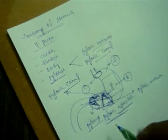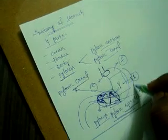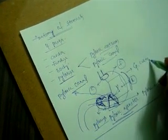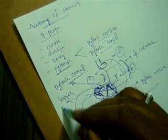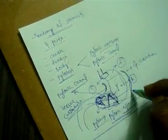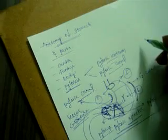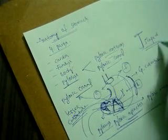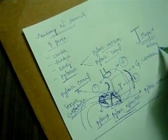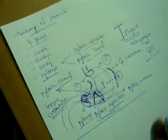This is the anatomy of the stomach. Here this side is called as the greater curvature and this part is called as the lesser curvature. The appearance of the stomach is in the letter J shape, so it is termed as a J-shaped enlargement of the GIT — gastrointestinal tract.